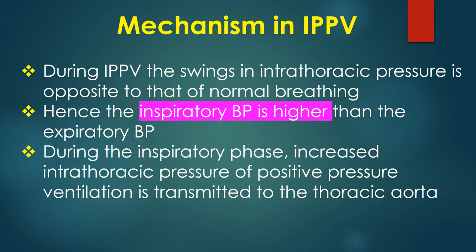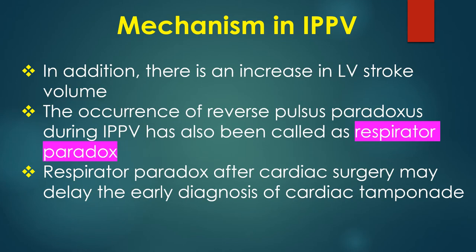During IPPV, the swings in intrathoracic pressure are opposite to that of normal breathing. Hence, the inspiratory blood pressure is higher than expiratory blood pressure. During the inspiratory phase, the increased intrathoracic pressure of positive pressure ventilation is transmitted to the aorta, and there is an increase in left ventricular stroke volume. The occurrence of reverse pulsus paradoxus during IPPV has also been called the respirator paradox.